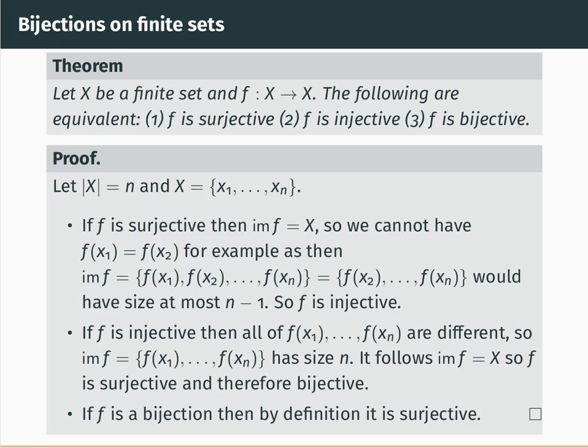Here's another result on bijections on finite sets. If we have a function f from a finite set X to itself, then the following three things are equivalent: first, f is surjective; second, f is injective; and third, f is bijective. To say those are equivalent means that one implies two, two implies three, and three implies one — so if any one of those is true, the others are also true.